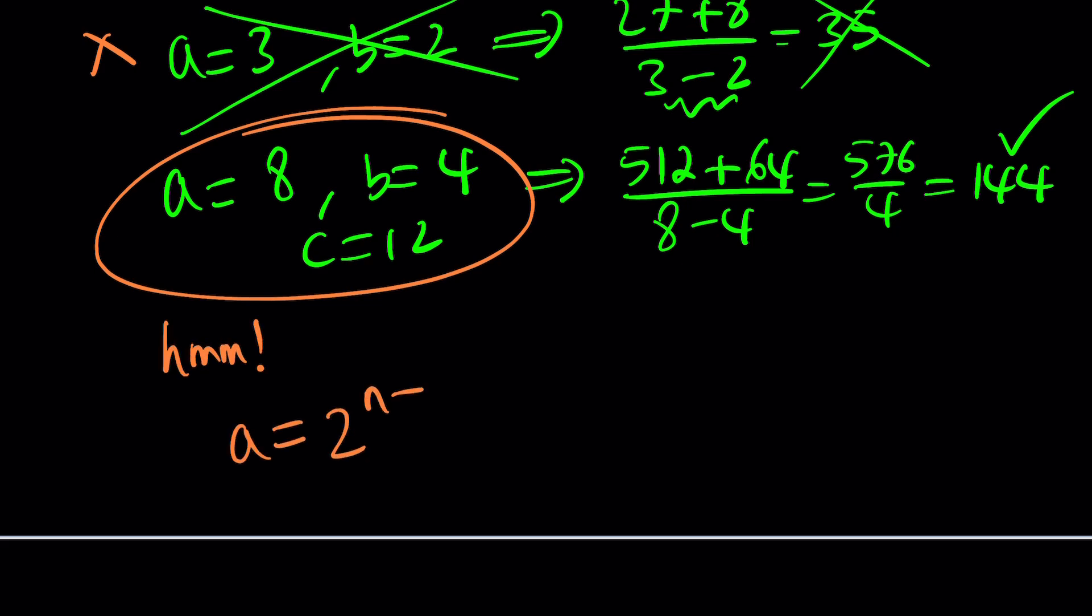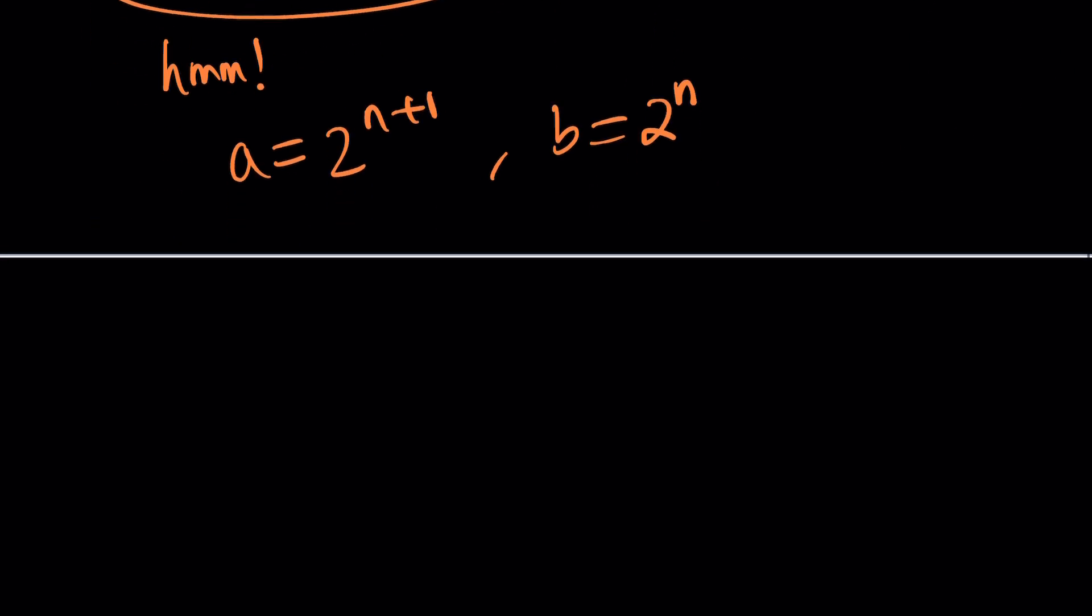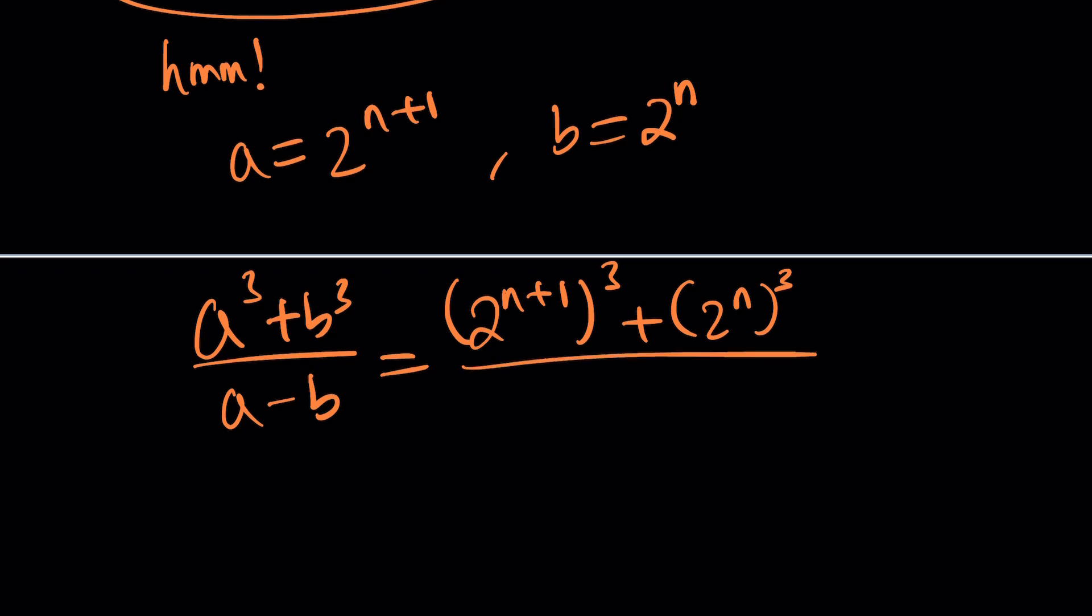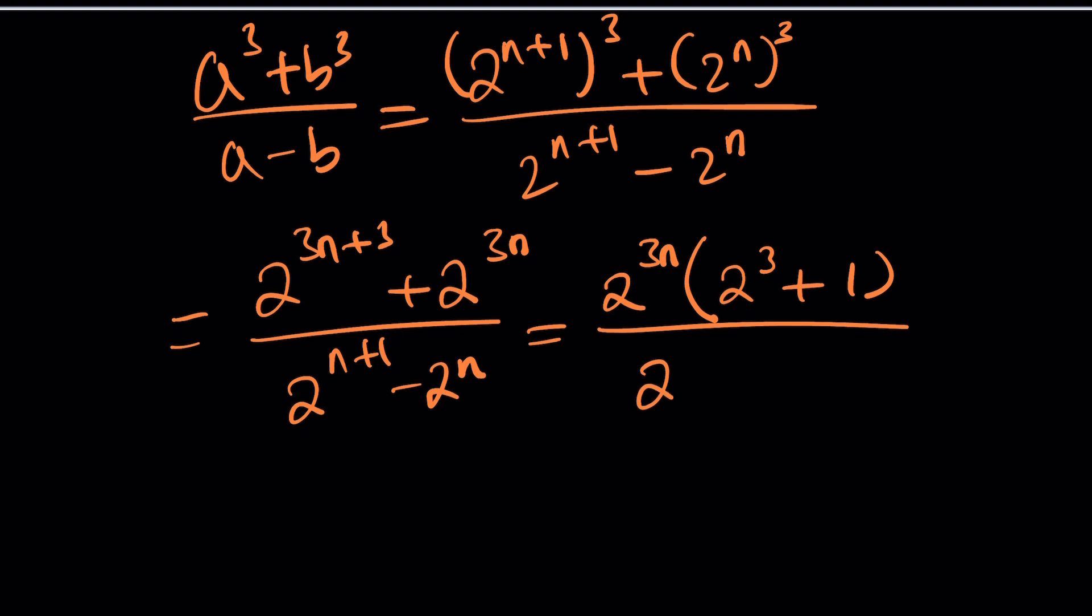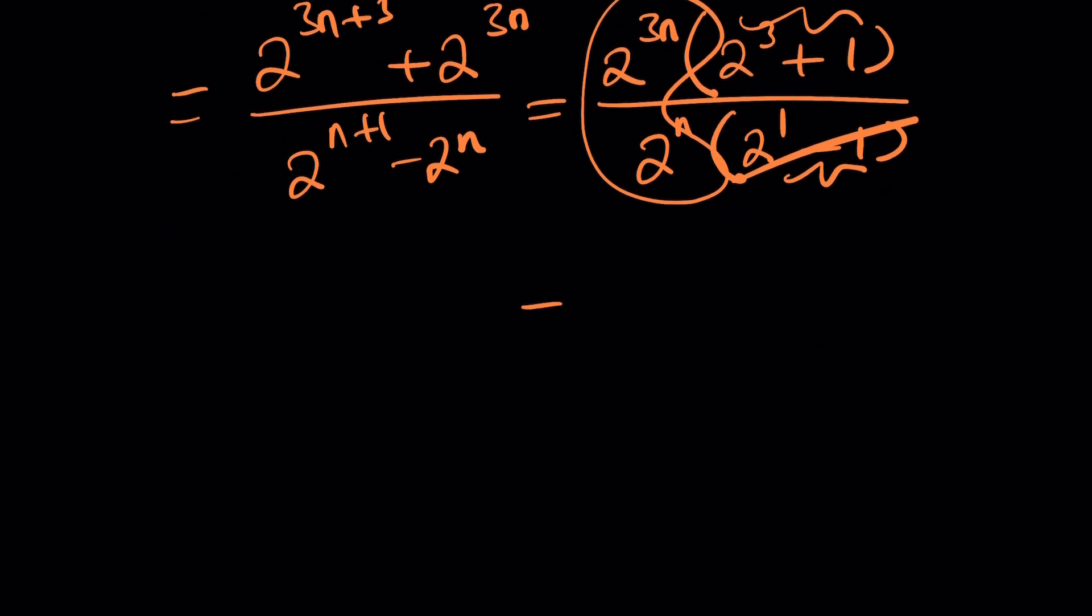If a is equal to 2 to the power n plus 1, and b is equal to 2 to the power n, and again, remember our original expression, a cubed plus b cubed divided by a minus b, I'm going to go ahead and replace a with this, let's cube it, and then b with this, let's cube it, and divide it by 2 to the power n plus 1 minus 2 to the power n. Let's simplify this. This is going to be 2 to the power 3n plus 3 plus 2 to the power 3n divided by 2 to the power n plus 1 minus 2 to the power n. We can factor out 2 to the power 3n. That'll give us 2 to the power 3 plus 1. And denominator, we can take out a 2 to the n. That'll give us 2 to the 1 minus 1. Or we can just write it as 2. This is 9, and this actual expression becomes 2 to the power 2n times 9. And this is supposed to equal c squared.